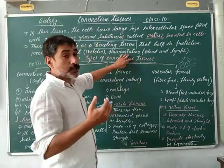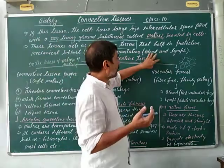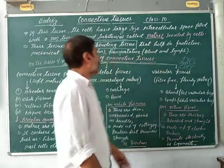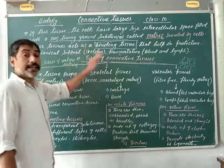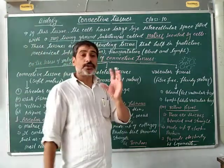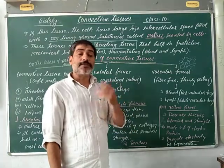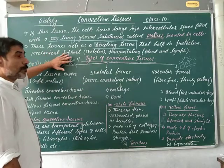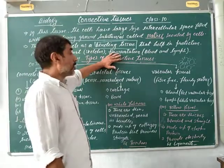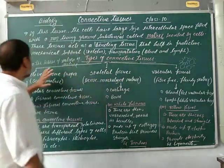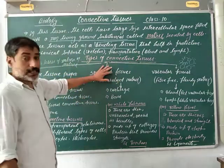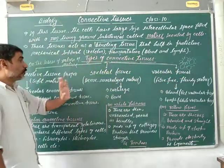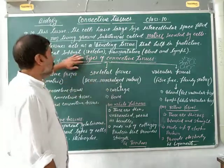It also helps in the transportation of material throughout the body. Examples of this are blood and lymph. Now, on the basis of the nature of matrix, connective tissue is classified into three groups: first, connective tissue proper; second, skeletal tissue; and third, fluid connective tissue. These are the different types of connective tissue based on the nature of matrix.